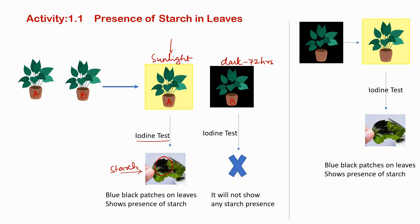Plant B was kept in the dark for 72 hours. When we add a few drops of iodine on its leaves, they will not show any color — no blue and black patches. That means there is no presence of starch, because the plant did not perform any photosynthesis process and has not made any food.